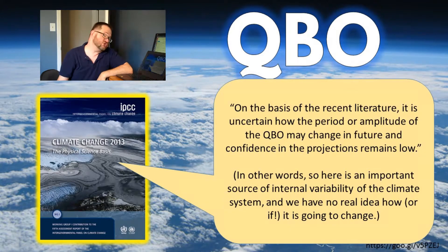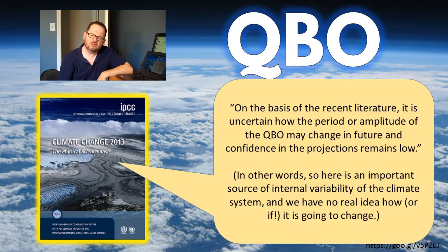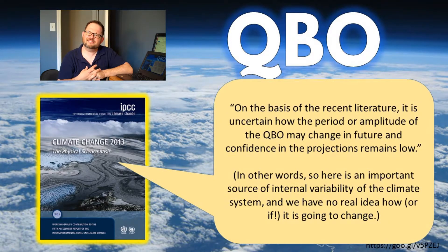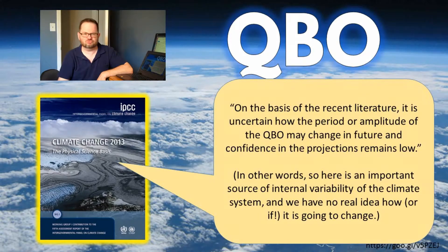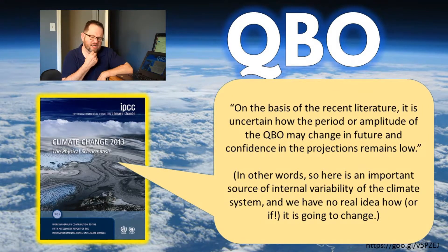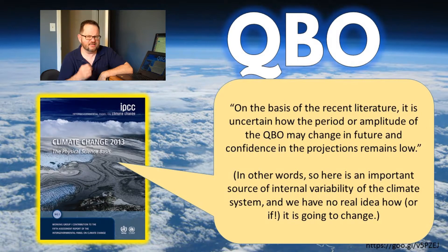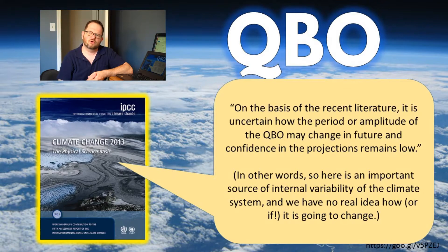The AR5 takes a rather timid response: on the basis of recent literature — where we can now simulate the QBO better — it is uncertain how the period or amplitude of the QBO may change in the future, and confidence in the projections remains low. What they're trying to say is that this is a big deal because it controls things like how productive the Atlantic is at making hurricanes, and yet we have no real understanding of how it could change in a world with anthropogenic climate effects. In practice, if you read the AR5 more closely, some models say it'll get stronger, some say it'll get weaker — the ensemble of global climate models did not produce a consistent answer as to how the QBO will change.